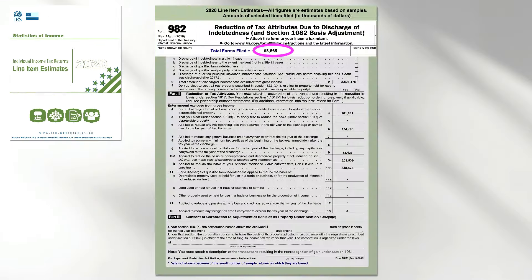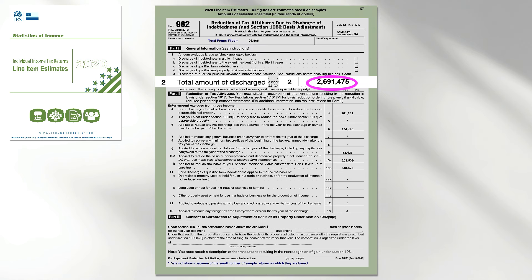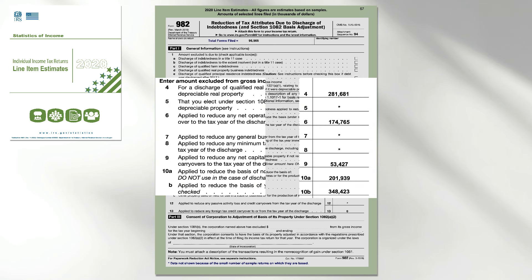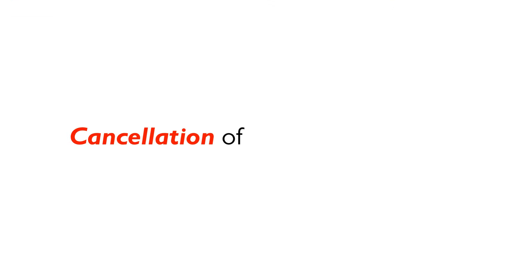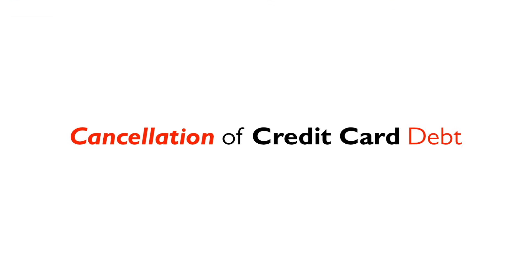Almost 100,000 filers claimed some type of exception in 2020, which amounted to over $2.7 billion. The majority of that had to do with real business or primary residence property basis reduction. We will go over the most frequently experienced type of debt on 1099-C.